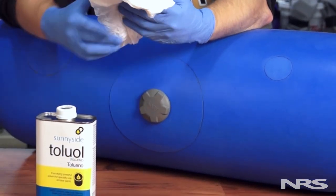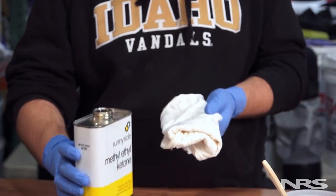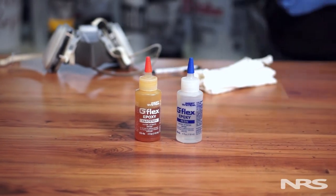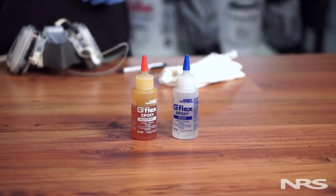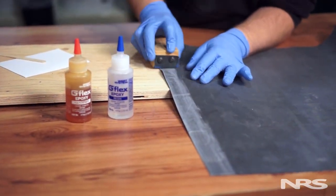Anytime you're gluing wood, metal, fiberglass, or ABS plastic to boat fabric, you'll want to use G-Flex epoxy. G-Flex is a very strong and flexible epoxy that will stick to just about anything as long as the surfaces are prepared properly.